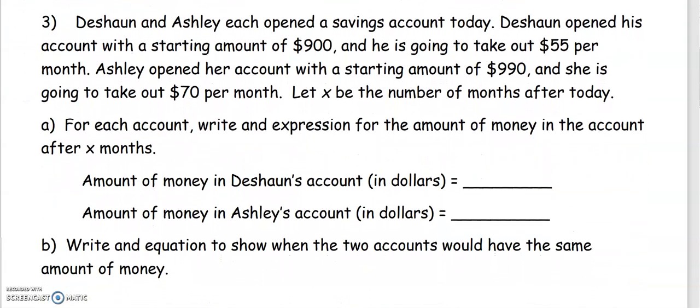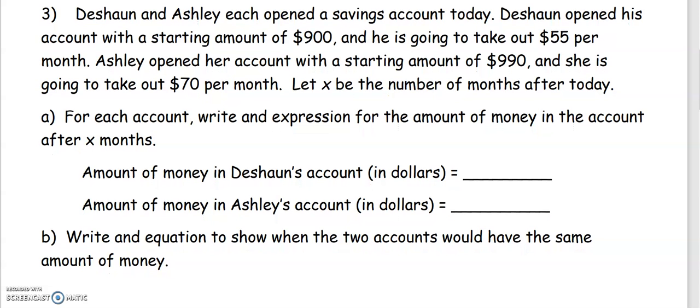The next one is a word problem. Deshaun and Ashley each opened a savings account today. Deshaun opened his account with a starting amount of $900 and he's going to take out $55 per month. Ashley opened her account with a starting amount of $990. She is going to take out $70 per month. Let x be the number of months after today.